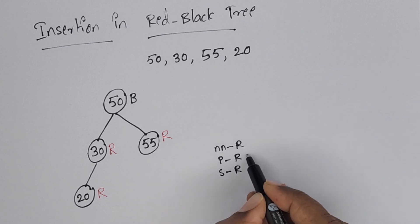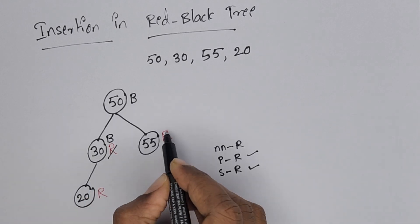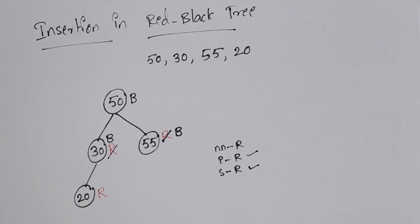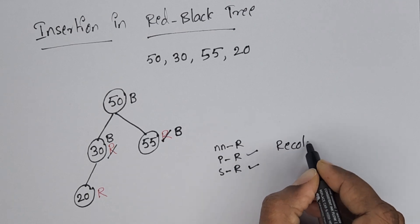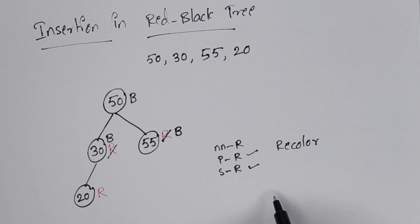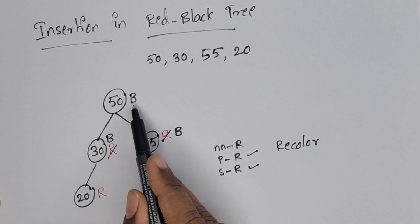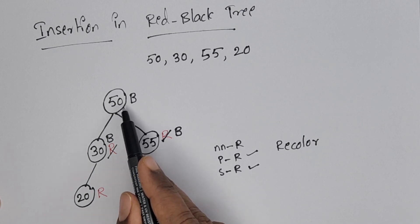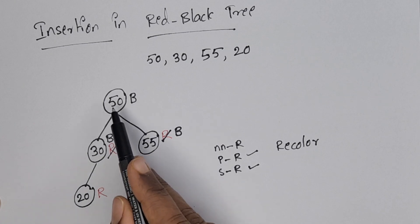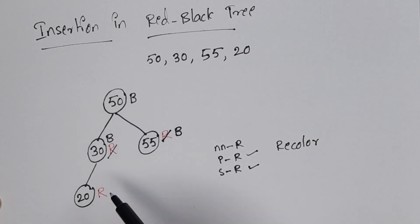When the new node, parent, and sibling are all red, we perform recoloring. Change the parent from red to black, and change the sibling from red to black as well. This is Case 1: recolor the parent and sibling. We also need to change the grandparent's color — that is node 50. However, since 50 is the root node, we cannot change its color. The root is always black. If it were not the root, we would change its color too. This is the first case in insertion.